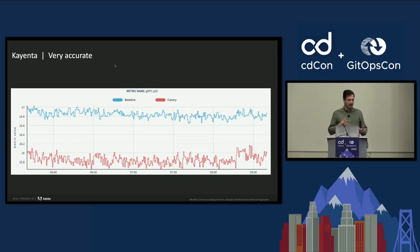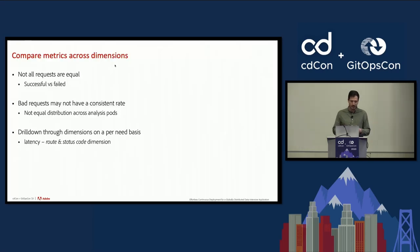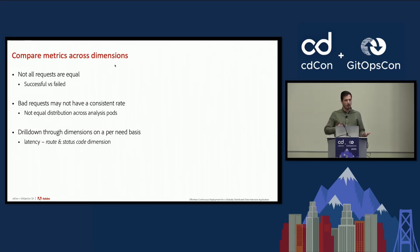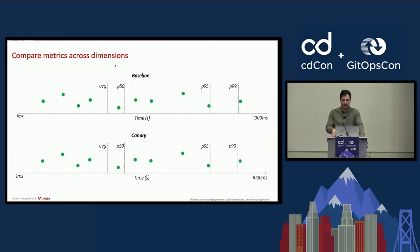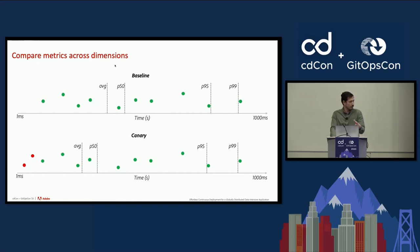We embarked on a journey to understand why we were reporting different latencies. Not all requests are equal — you have requests that process normally and take longer, and bad requests that you terminate immediately. Bad requests are not at a consistent rate, so one analysis pod may observe more of them than the other, and the overall observed latency will differ. This is why you need to be more granular when comparing latency. For example, successful requests equally distributed across baseline and canary will yield the same latencies, but if the canary observes more bad requests, they shift the computed latency, yielding a difference. We recommend using route and status code dimensions to compare apples with apples.